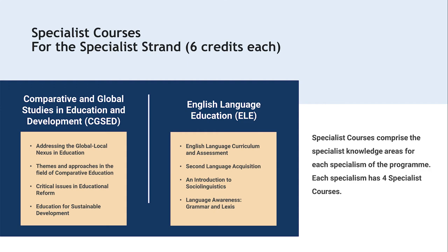Each specialism has four specialist courses. For example, Comparative and Global Studies in Education and Development has four courses addressing: the global-local nexus in education, themes and approaches in comparative education, critical issues in education reform, and education for sustainable development. All of these are mandatory for those taking that specialism. If you choose the English Language Education program, it works exactly the same way, with different core disciplines.